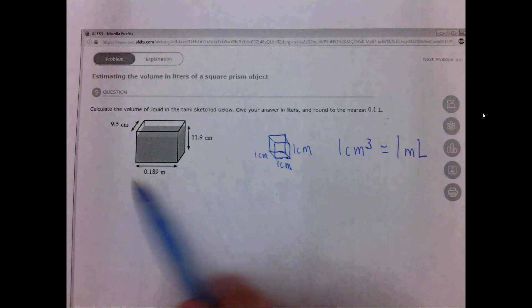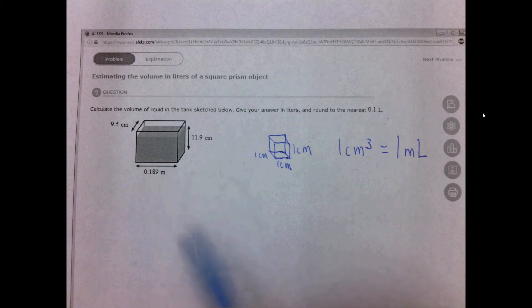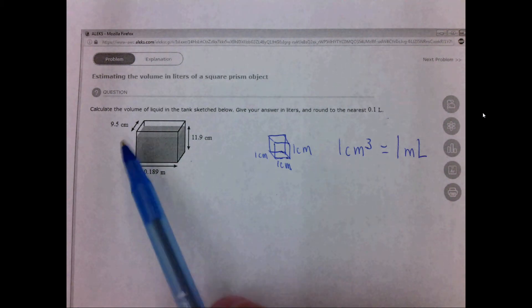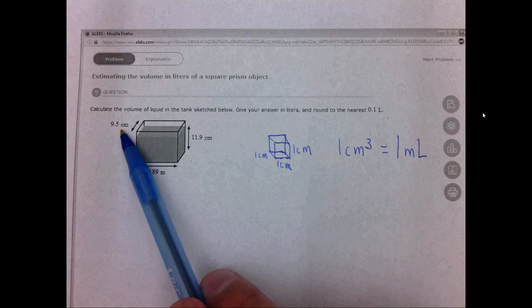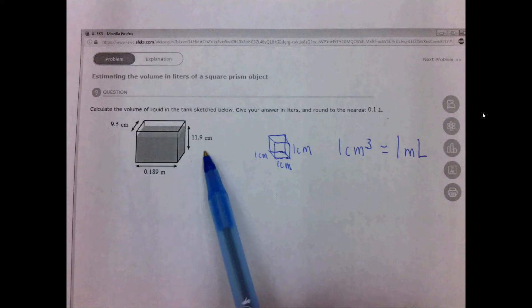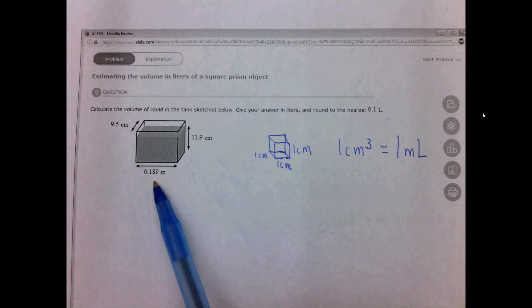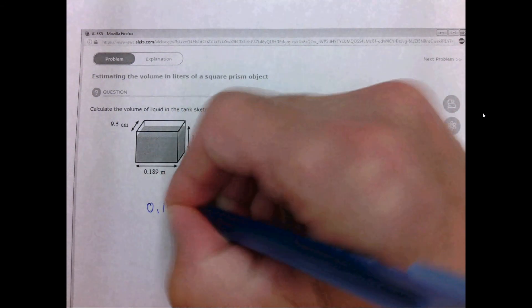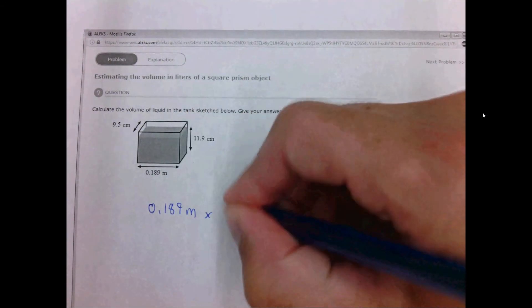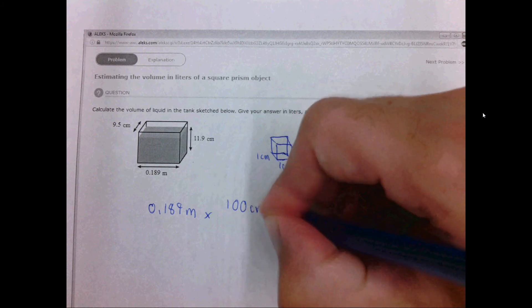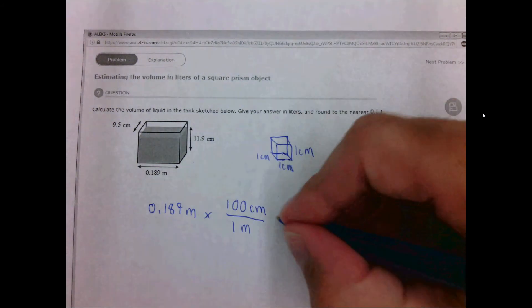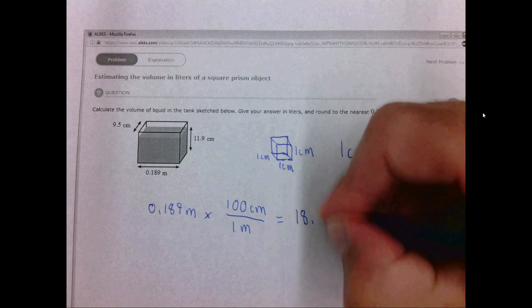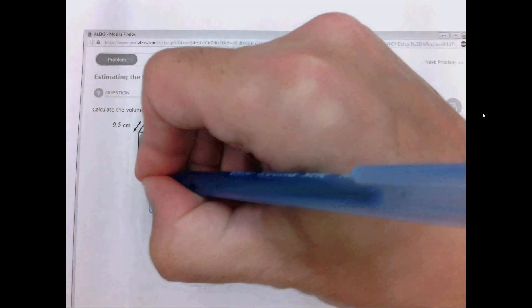So in order to find how many milliliters this is, we first want to find out how many centimeters cubed it is, but you'll notice they did a little bit of an annoying thing. They gave two of the distances in centimeters and one of them in meters, so we need to go ahead and convert this to centimeters. We take 0.189 meters times 100 centimeters per one meter, or we just multiply this by 100, and we get 18.9 centimeters. So this distance is really 18.9 centimeters.